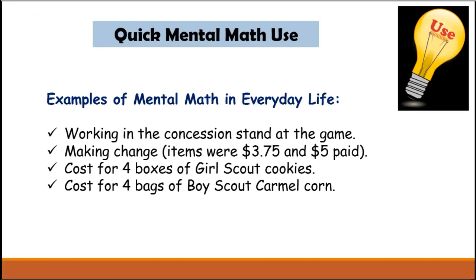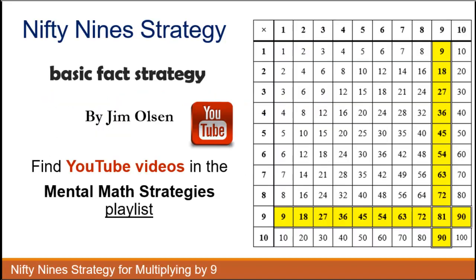Quick mental math use. Some examples of using mental math. Working in a concession stand at a ball game. Making change. Cost of 4 boxes of Girl Scout cookies. Or 4 bags of Boy Scout caramel corn.